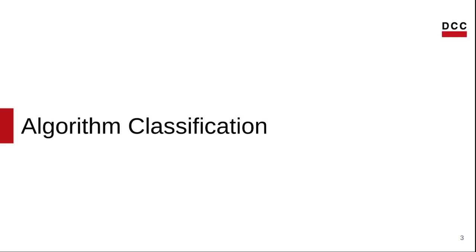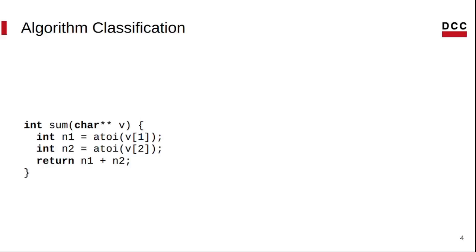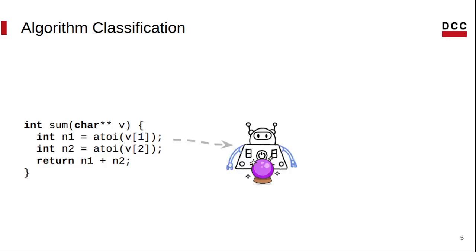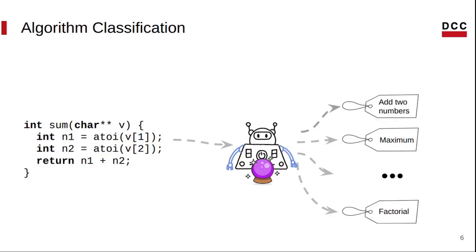This work evaluates different techniques to solve algorithm classification. Algorithm classification can informally be defined as the process of identifying, among a set of algorithm specifications that solve different problems, which one is related to a given program. For instance, we have a program that is responsible for adding two given numbers and returning the result. A classifier receives this program as input and attempts to choose which problem the program is trying to solve. In this example, we would like to say that this program is adding numbers and not computing the maximum or computing factorial. Thus, we are able to match the specification of two programs — the input program and the specification that is a class.